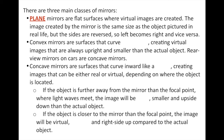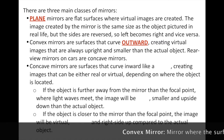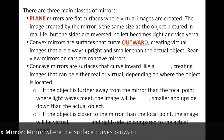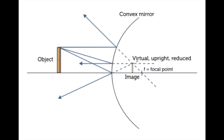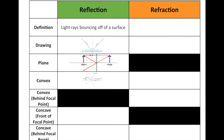Convex mirrors are mirrors that curve outward. They create virtual images that are always upright and smaller than the actual object. Rear view mirrors on cars are convex mirrors. The image looks like it's inside the mirror and it gives you a wider field of view because the image is compressed and smaller. In a convex mirror, the rays all bounce outward and none of them cross each other, so the result is a virtual image that's upright but reduced in size.